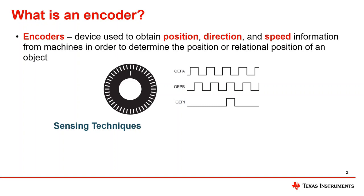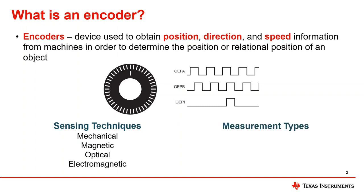Different kinds of encoders employ a variety of sensing techniques such as mechanical, magnetic, optical, and electromagnetic. Each of these encoder sensing techniques also come in two different measurement types. Absolute encoders encode the absolute position of a motor at any point in time — every point along the linear or rotational axis is associated with a specific code, meaning the instantaneous position is known right from powering the encoder. Incremental encoders, also known as quadrature encoders, describe incremental changes in position with respect to a known reference point. Throughout this video, we'll be focusing on optical incremental encoders.